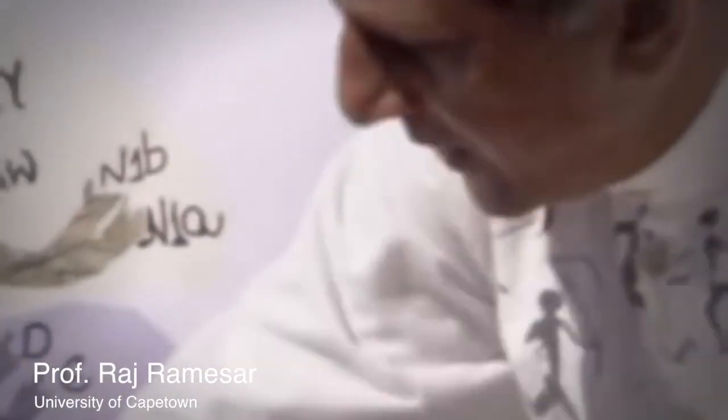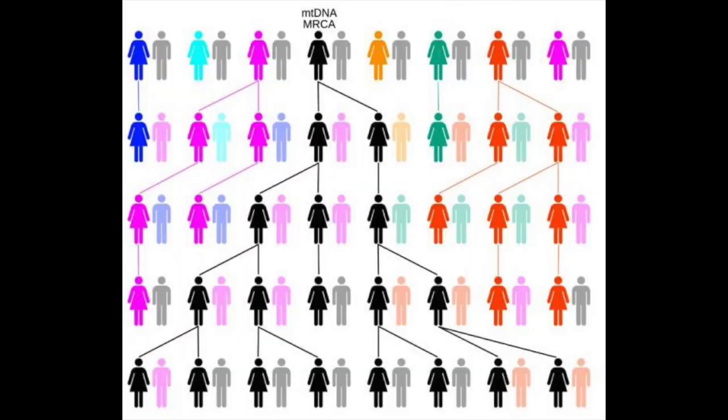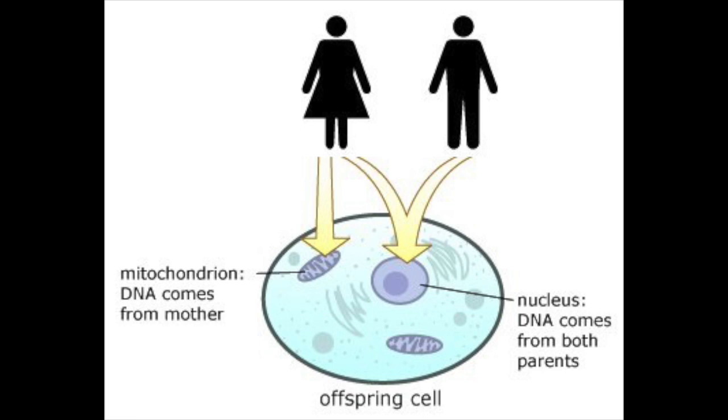Geneticist Raj Ramassar has used these differences to help build a global family tree by tracing genes down the female line. Our modern genes are the branches of the tree, and geneticists have followed them back in time to find our ancient roots. Because each person's mitochondrial genome is inherited from his or her mother, all mitochondrial lineages are maternal.